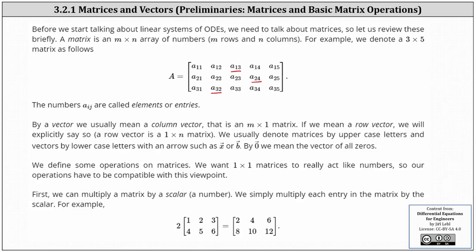When representing a vector using a matrix, we usually mean a column vector, meaning an m by one matrix. Remember, this means the matrix has m rows and one column. If we mean a row vector, we will explicitly say so. A row vector is a one by n matrix, which means a matrix with one row and n columns. We usually denote matrices by uppercase letters and vectors by lowercase letters with an arrow, such as vector x or vector b.